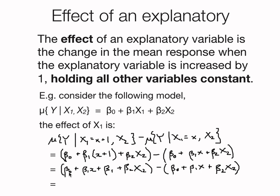So now I can do the subtraction. Beta0 minus beta0, that is going to be 0. Beta1 x minus beta1 x, that is 0. Beta2 x2 minus beta2 x2, that is also 0. The only thing left is this beta1. So in this particular model the effect of x1 is beta1.